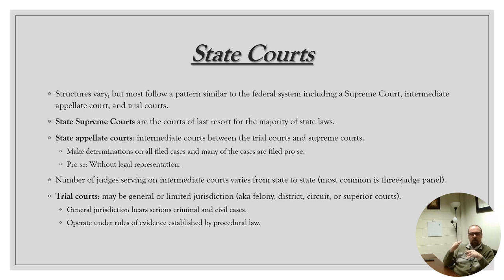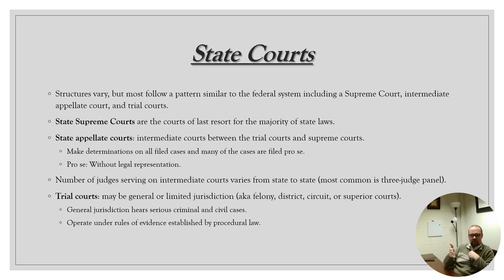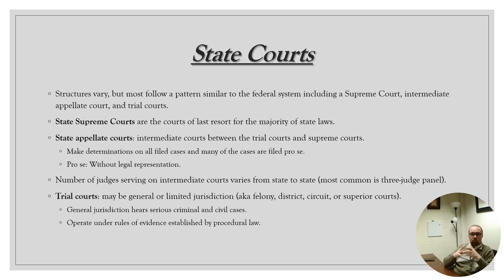If it's a federal constitutional question, that's where you can go to SCOTUS, the U.S. Supreme Court. State appellate courts typically make determinations on all filed cases, and many of those cases are filed pro se, which means without legal representation. The number of judges serving on those courts varies from state to state, but it's normally a three-judge panel. Then you have your trial courts, which are really like your county superior courts, with general jurisdiction to hear all criminal and civil cases.